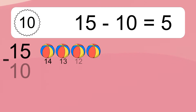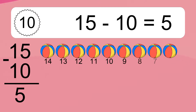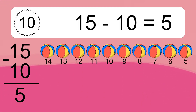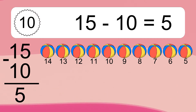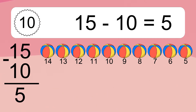15 minus 10 equals what? 15 minus 10 equals 5. Let's count it: 14, 13, 12, 11, 10, 9, 8, 7, 6, 5.